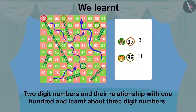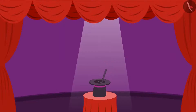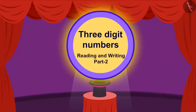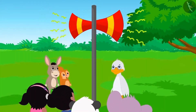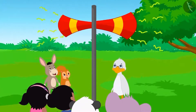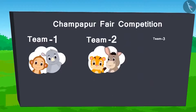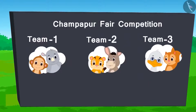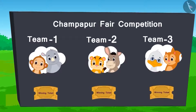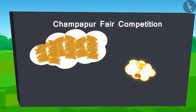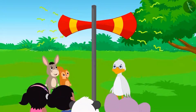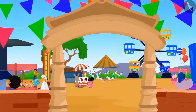Hello children, in the last video we learnt about 2 digit numbers and their relation with 100. In this video, we will learn about 3 digit numbers. All the people of Champapur are hereby notified to participate in the competition at the fair. There will be 2 people in each team and 1 ticket will be presented upon winning each game. The team having the maximum number of tickets in the end will win. Let's go to the Champapur fair.